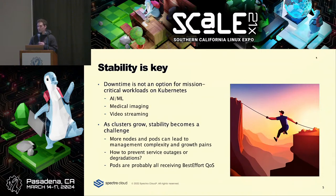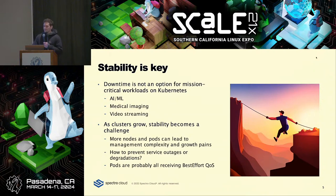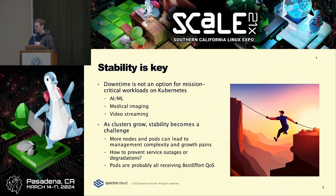If you specify limits and requests for a pod and they equal one another, you'll receive what's called guaranteed. If you specify at least a memory request or memory limit, that'll be considered burstable. Best effort means you just didn't specify anything. When there's node pressure and things start getting evicted by the kubelet, you will be evicted sooner if you're in the best effort category.